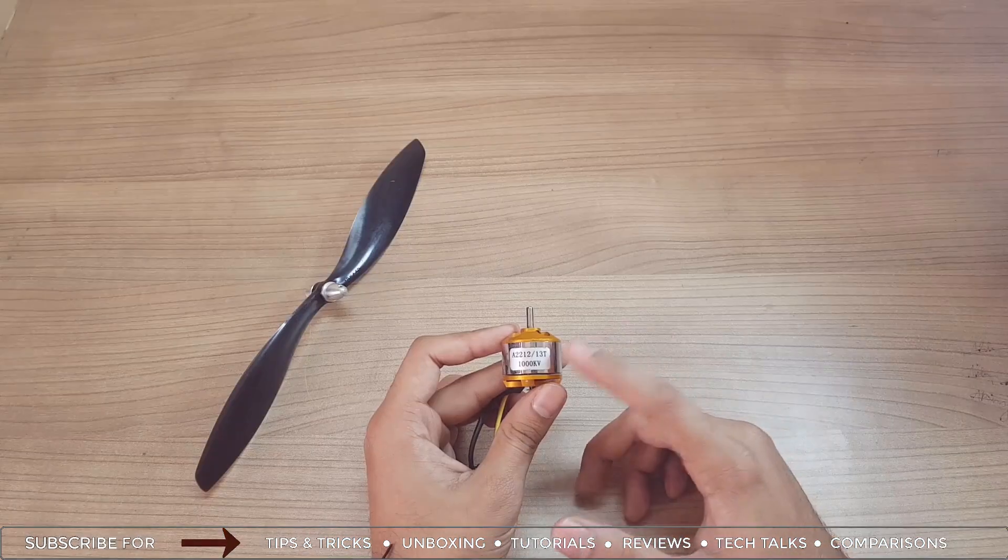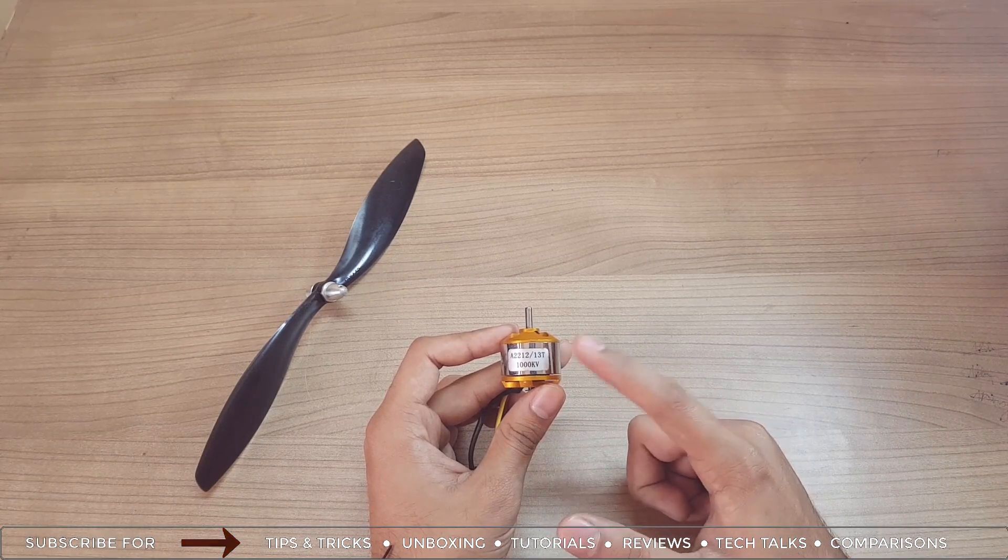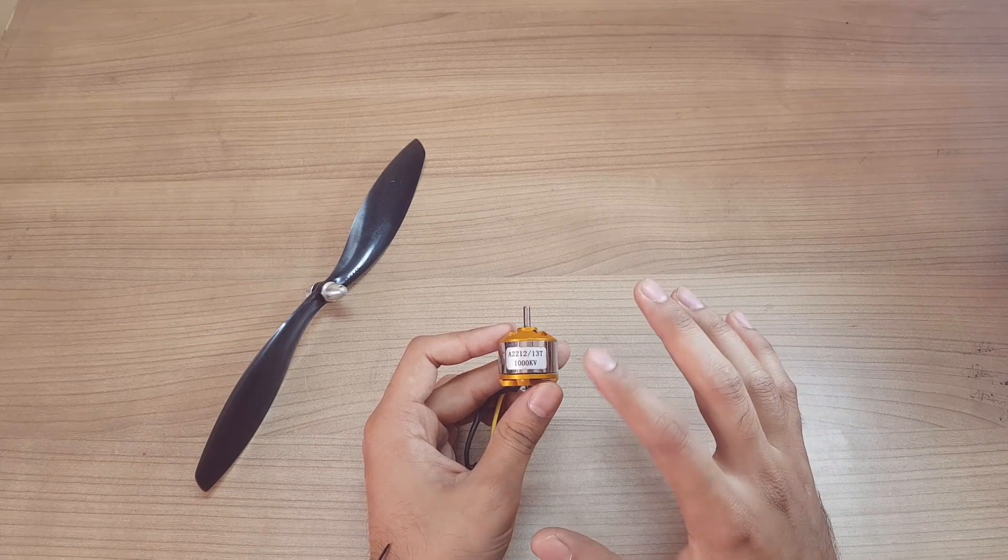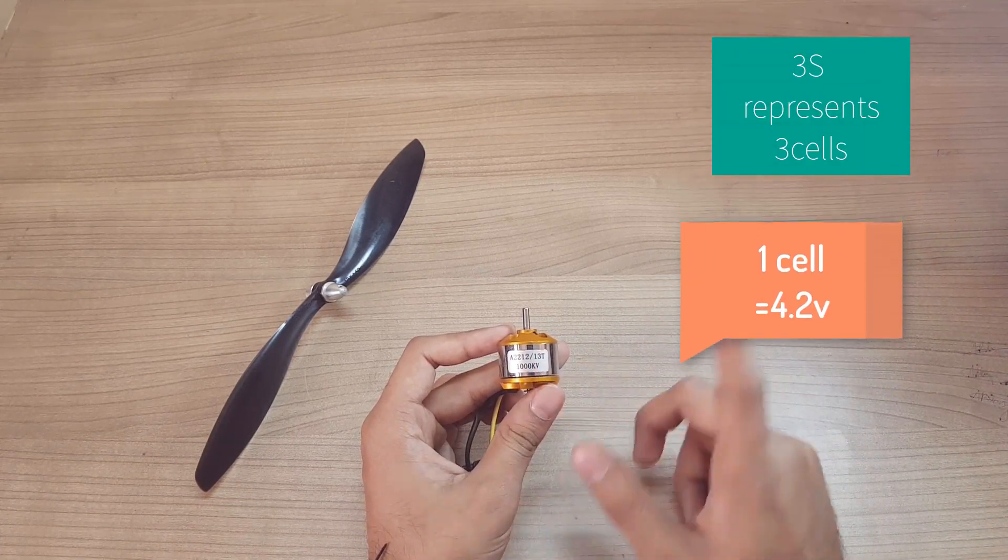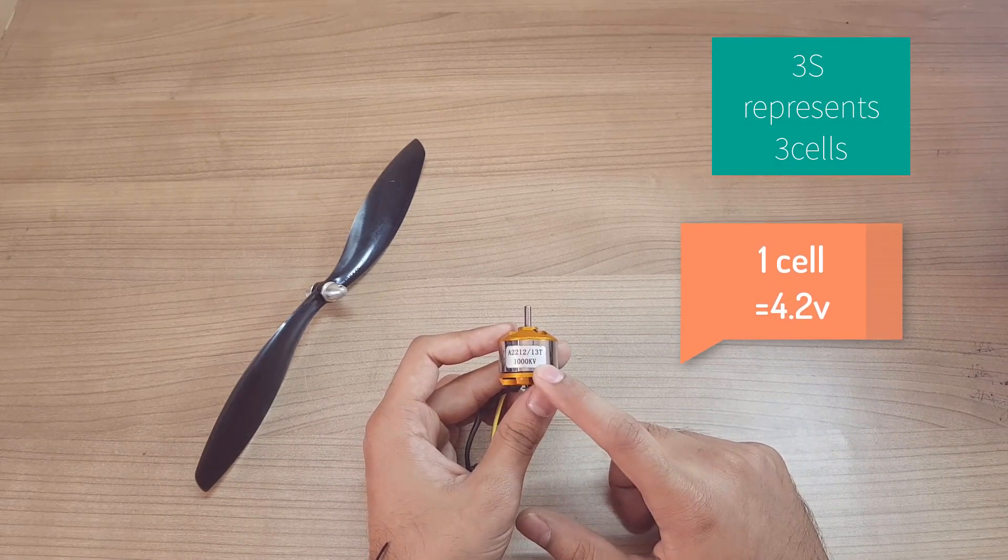If you are using a 3S LiPo battery, which I'm gonna discuss in the LiPo battery section video, for general conversion, a 3S LiPo battery has 12.6 volts charge. Take it as 12 volts. For 12 volts with 1000 volts per revolution, you can do the calculation - it's 12,000 RPM.